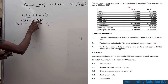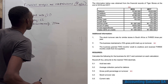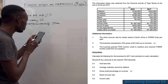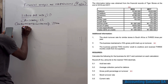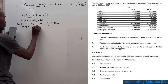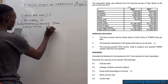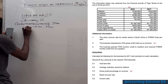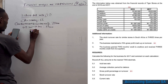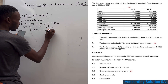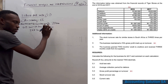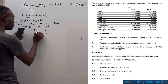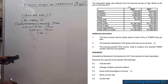Current liabilities total 77,000. After adding all current assets to get 419,500 and subtracting inventory of 151,200, we get 268,300. Dividing 268,300 by 77,000 gives us 3.48:1.